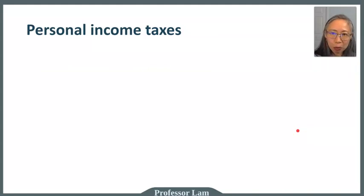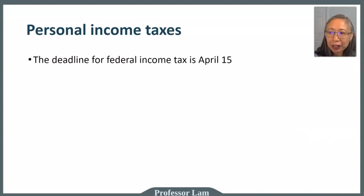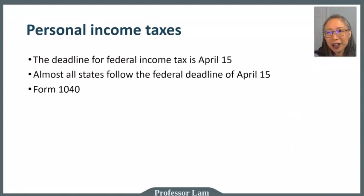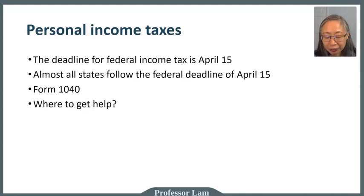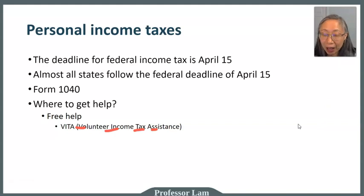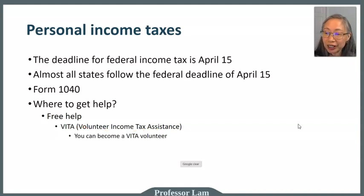Now let's look at the practical aspects of tax. In the United States, the federal income tax deadline is April 15, and almost all states follow the same deadline. The form for individuals at the federal level is Form 1040. If you don't know how to complete it, there are many resources available. The most popular free program is VITA — Volunteer Income Tax Assistance. If you're a college student, your campus may offer a VITA program, and you can even become a volunteer; the IRS and the school will train you.